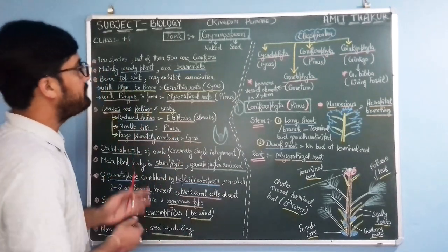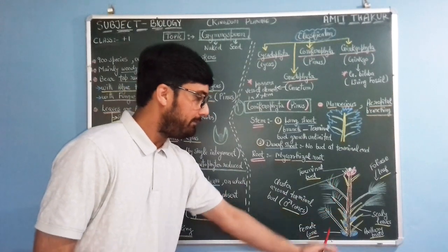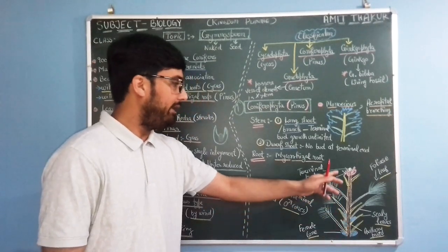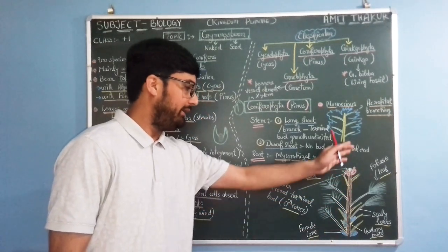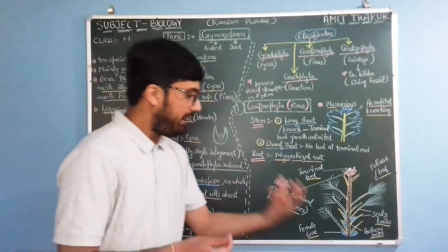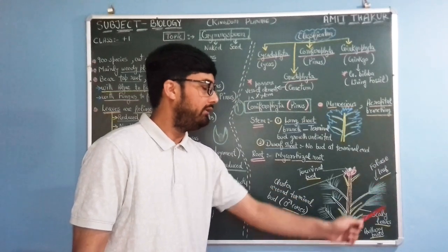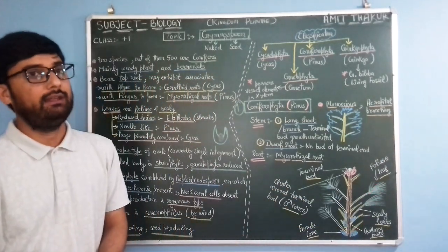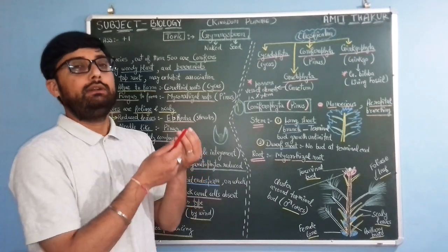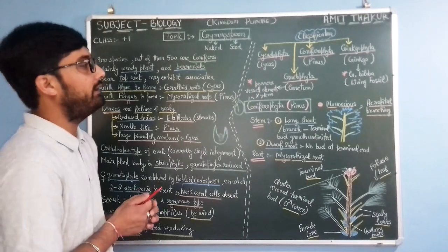So that is the introduction of gymnosperms. The Pinus tree possesses both female strobili and male cones on the same plant, making it monoecious. It has scaly leaves protecting the axillary bud, and foliose needle-like leaves for photosynthesis and minimizing transpiration. In the next lecture, we will discuss the life cycle of gymnosperms. Thank you.